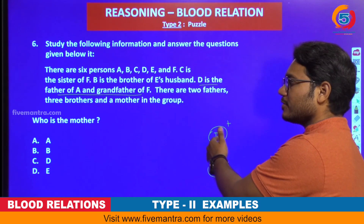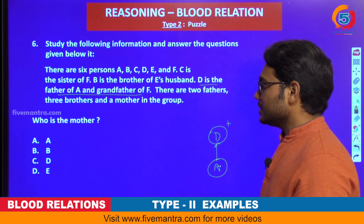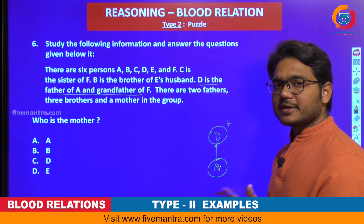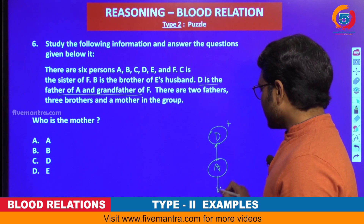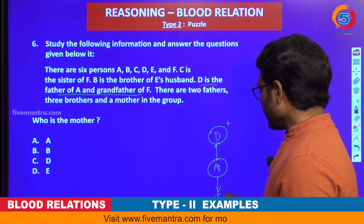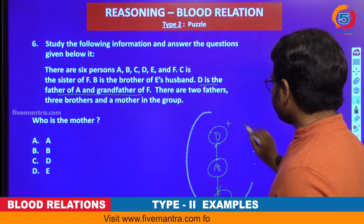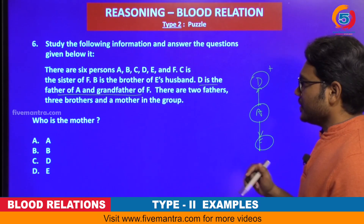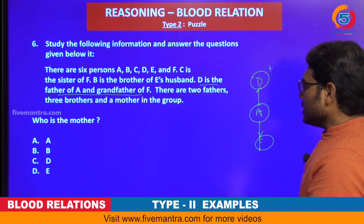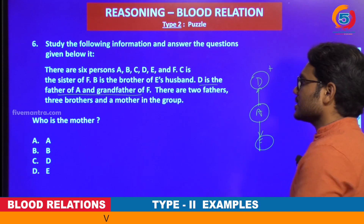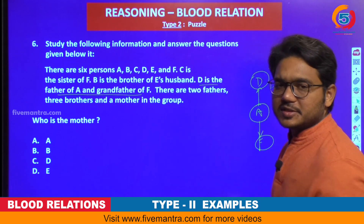D is the father of A and grandfather of F. So where could F be? F could be the child of A. F is the child of A, and the grandfather of F is D, and A's father is D. From this statement, this part of the tree is covered.